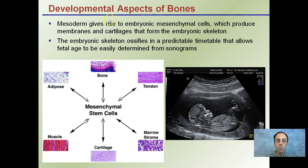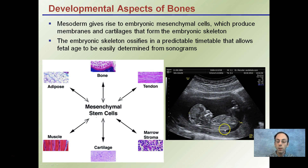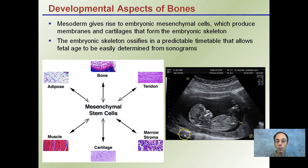Regarding development aspects of bone, the mesoderm gives rise to embryonic mesenchymal cells, which produce membranes and cartilages that form embryonic skeletons. The embryonic skeleton ossifies at a very predictable timetable, which allows fetal age to easily be determined from sonograms. By looking at the degree of ossification, the age of the baby can be determined, which can then establish the date of conception and potential date of birth — a non-invasive way to determine the age of the unborn baby.